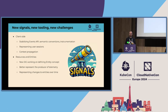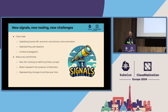These new signals come with new challenges. On the client side there's been a lot of work to stabilize the events API to address concepts we hadn't considered before — like how do we represent user sessions, how is that tied to resource attributes, and how do we propagate context from the client side all the way to the back end and back again? There's a new SIG that has just been formed to define the concept of an entity as a producer of telemetry and better represent changes of entities over time.